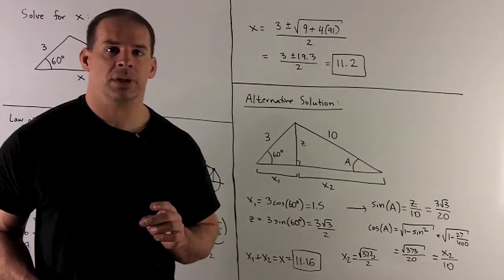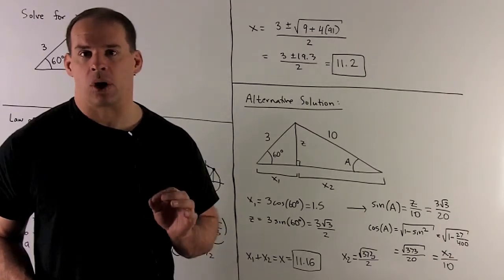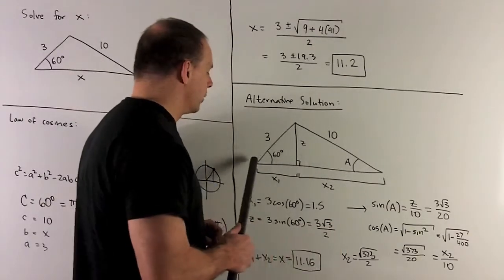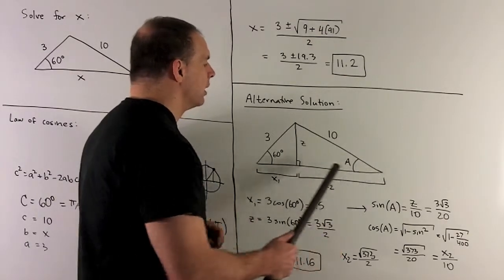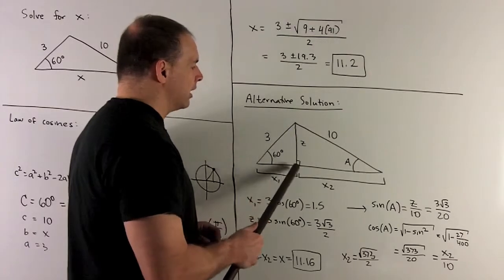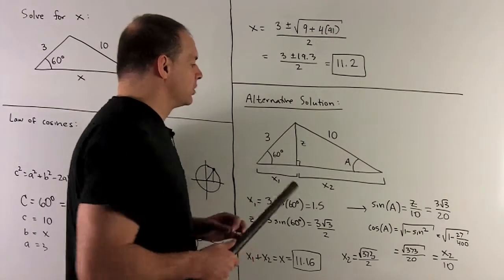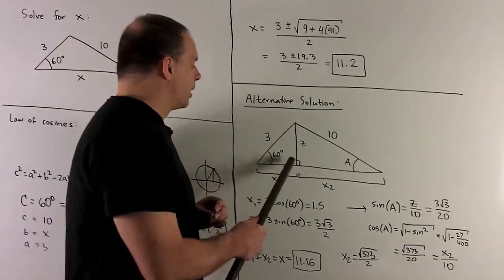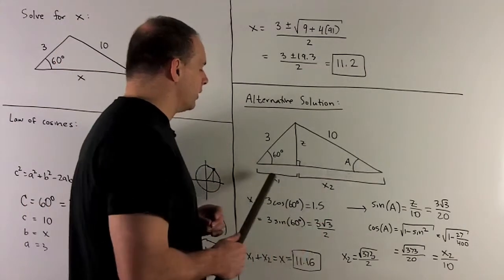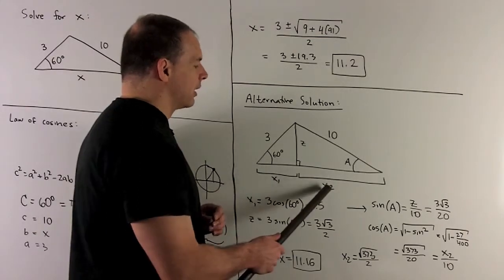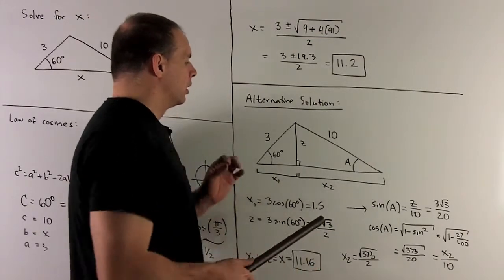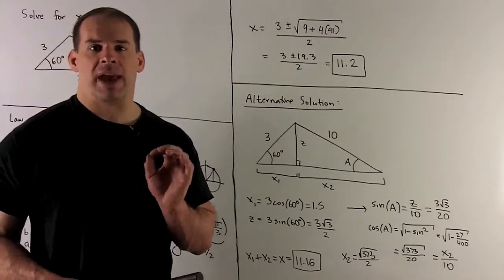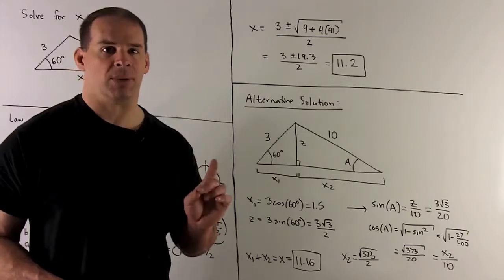Here's an alternative solution, which we can consider a check of our work. We're going to lay our base flat — the length along the bottom is going to be x. We take the top vertex and drop a segment perpendicular to the base, calling its length z. That splits our base into two segments x1 and x2, making our triangle into two right triangles, so we just work with right triangle trigonometry.